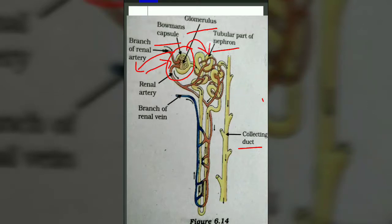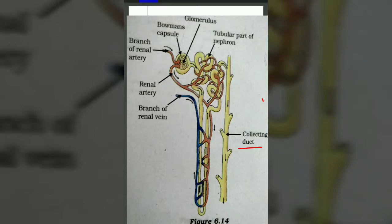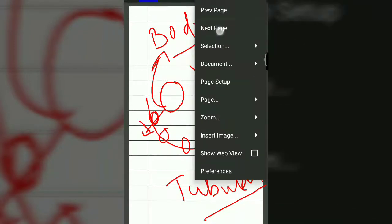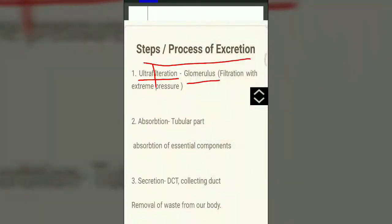Substances smaller than the glomerular pore size pass into the next portion, which is the tubular part. That completes the first step of excretion — ultrafiltration. The next step in the process of excretion is known as absorption. Absorption occurs in the tubular part — specifically in the PCT part and the hairpin loop part.